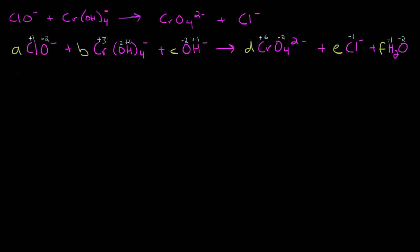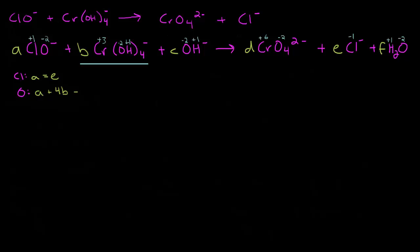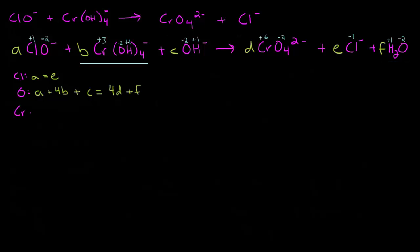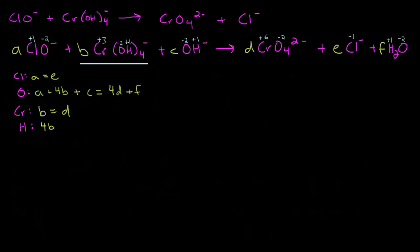Let's go ahead and write out our balance equations. Starting with chlorine: one chlorine in A equals one chlorine in E. For oxygen: one oxygen in A plus four oxygens in B plus one in C equals four in D plus one in F. For chromium: one chromium in B equals one chromium in D. For hydrogen: four hydrogens in B plus one in C equals two in F.